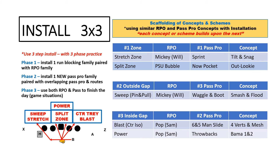Number two, we'll build off of that by going outside gap — sweep, pin, and pull. A natural partner is just to run the waggles with that, and the O-line is going to use the same blocking techniques; it's just that one's an RPO and one is a run-pass option. Number three, we'll get into our inside gap with the blast play, which is a simple counter ISO. We'll partner that with our six and five-man slide protection, which is our pocket pro. Then we finish up with one-back power, where we get into an Alabama throwback concept. You can see it's a simple way to evolve the system, and there's a process with the chunking and the scaffolding to make the learning simple and sound.